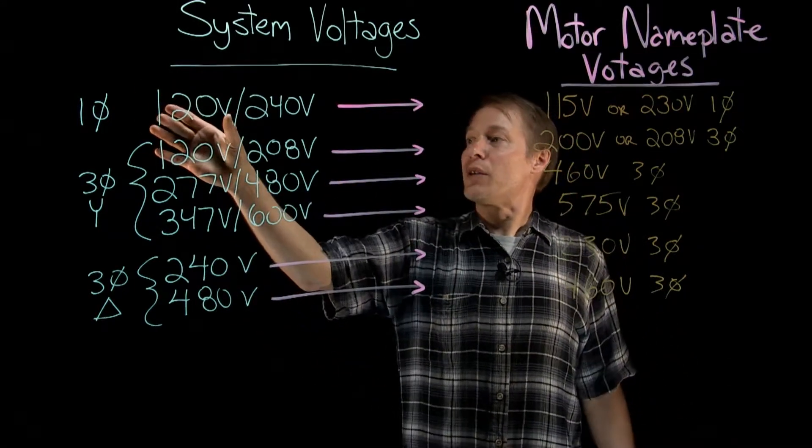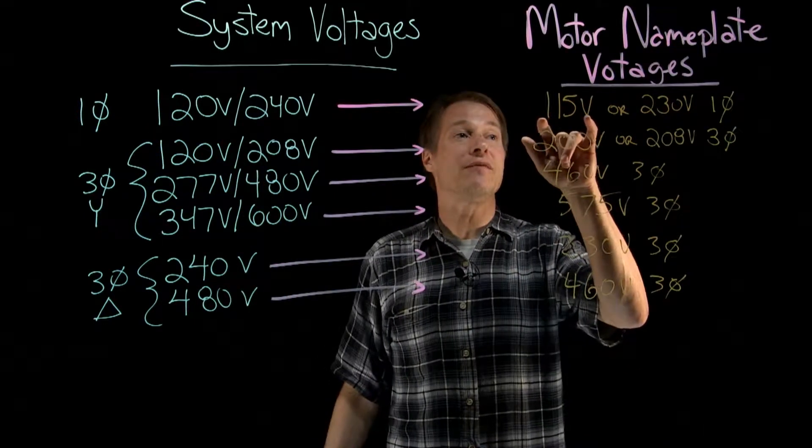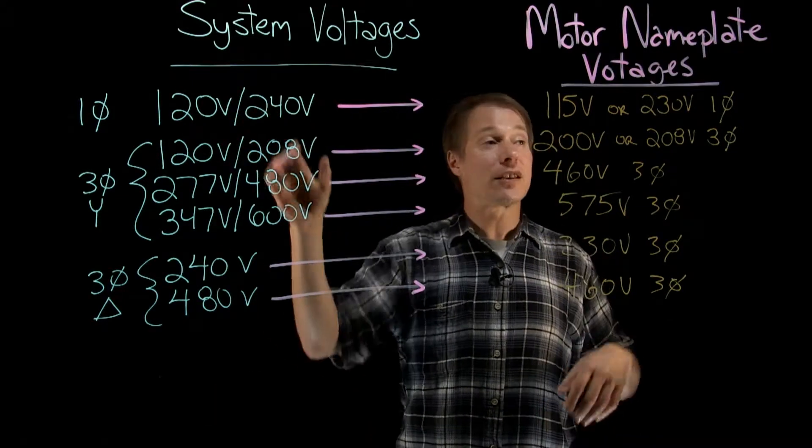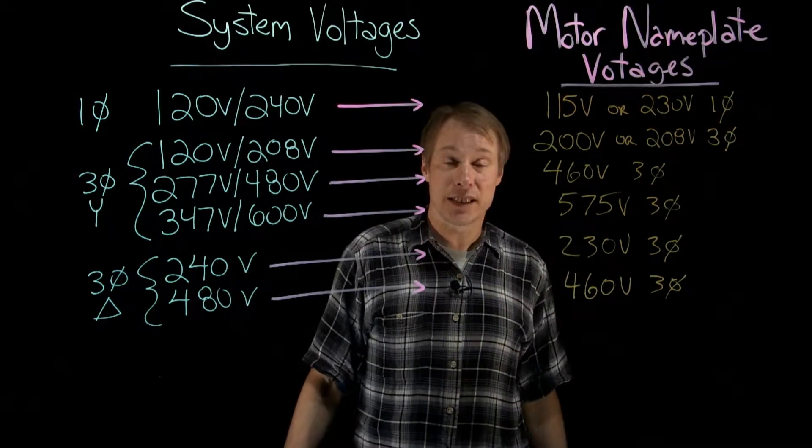So if you want to do 120V in your house, you can buy a 115V rated motor. If you want to connect it to the 240V section, then you'd buy a 230V motor, and you should note that those motors will be single phase.